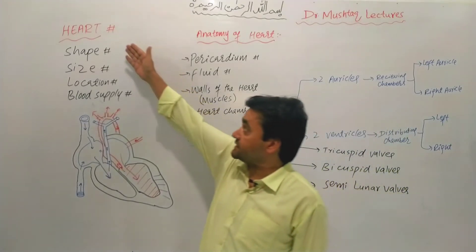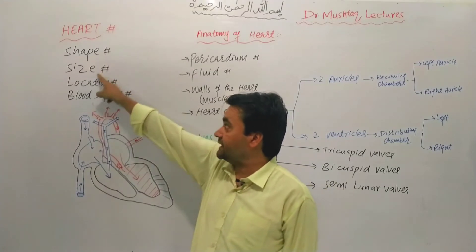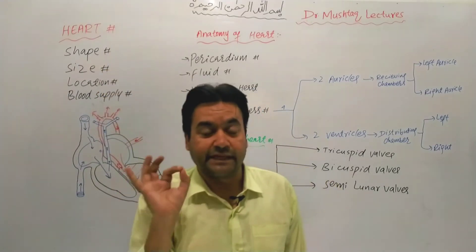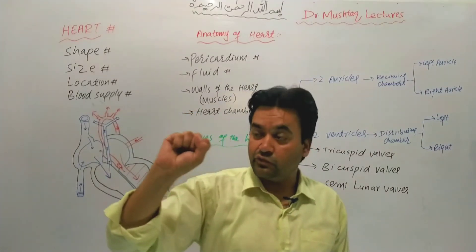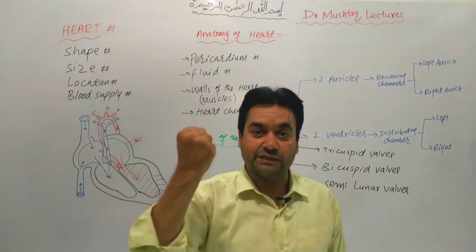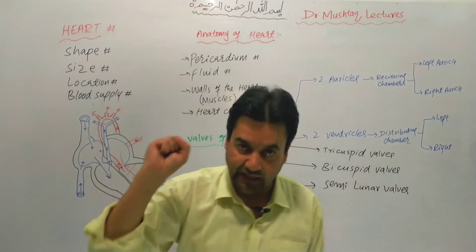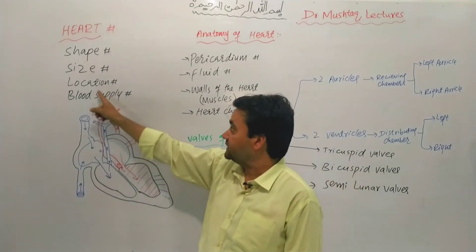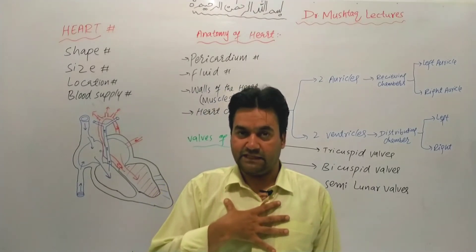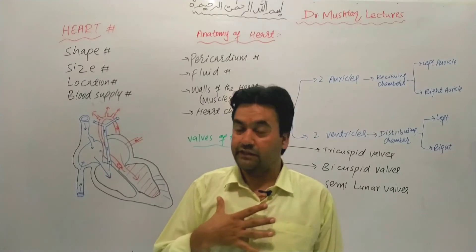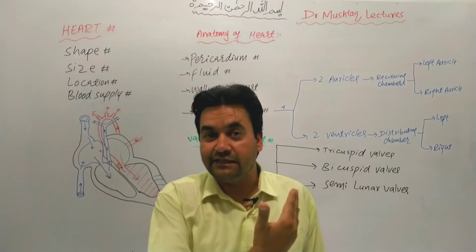The general shape of the heart is the shape and size of a fist. The human heart has been created the size of one's own fist. In terms of location, the heart is located in the thoracic cavity, slightly to the left, within the paracardiac cavity.